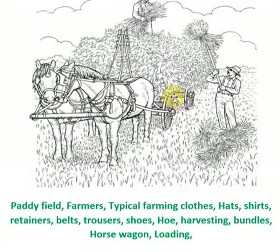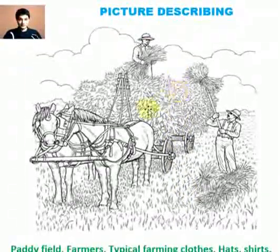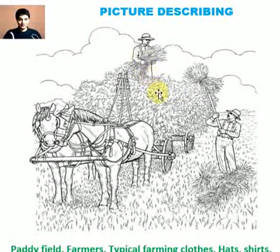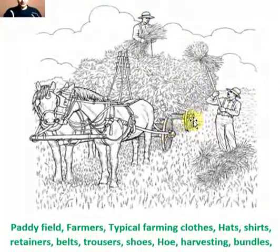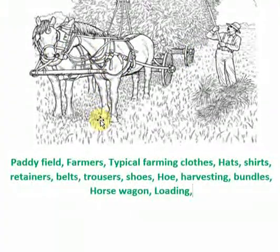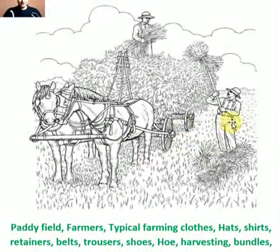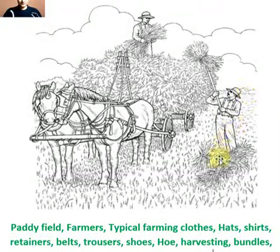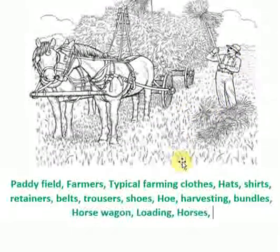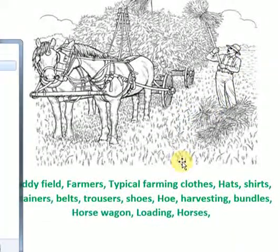The other farmer is standing on the horse wagon and helping the first farmer. These are called horses. Behind the paddy field we can see a forest — we write down 'forest or jungle.'